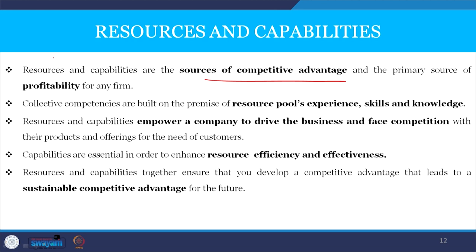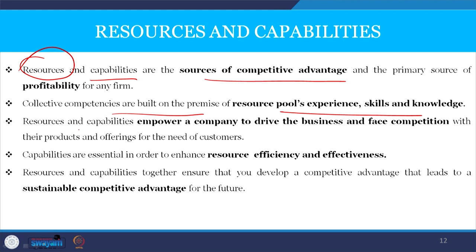Resources include land, capital, machinery, infrastructure, and technology. Capabilities are the abilities of individuals to work on different assignments. Collective competencies are built on the premise of resource pool expertise, experience, skills, and knowledge — the know-how of individuals. Resources and capabilities empower a company to drive business and face competition. Capabilities are essential to enhance resource efficiency and effectiveness.